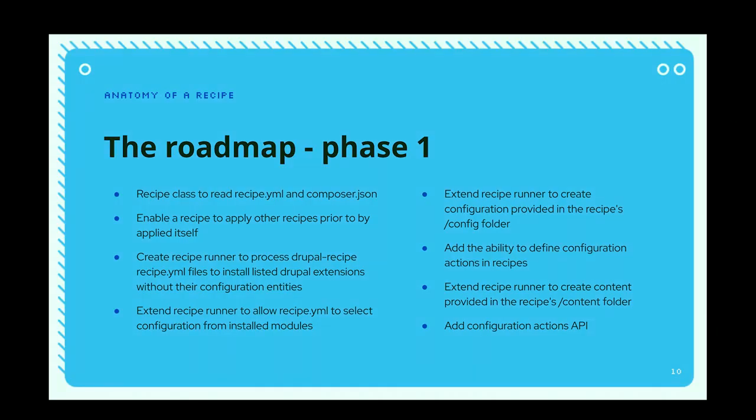Some of the things that were in phase one: really having a class in core that can parse out the recipe.yaml and the composer file. Basically having the recipe runner that will go through the different elements that are part of that recipe — doing things like installing other recipes if that's called for, installing any other modules or themes, importing configuration provided by those modules or themes, potentially selectively or on a bulk basis, and then running what we call configuration actions, which are a more flexible way to add configuration to your site. Critically, there's also an API so that contrib modules or even custom modules can define their own config actions, which makes it very expandable.